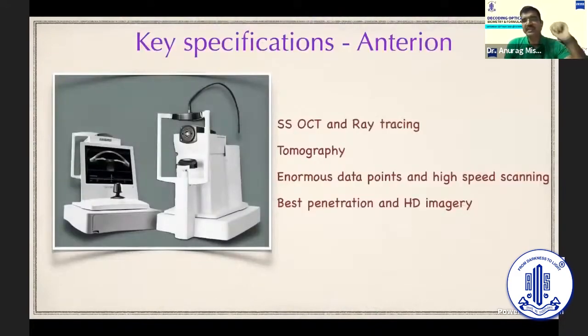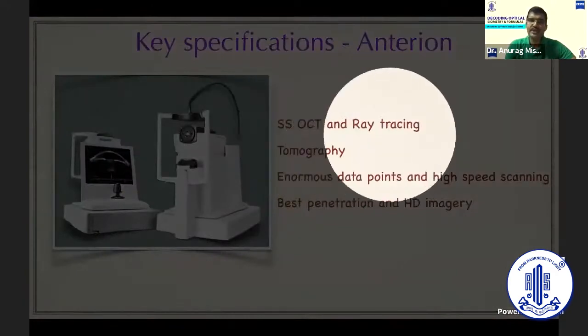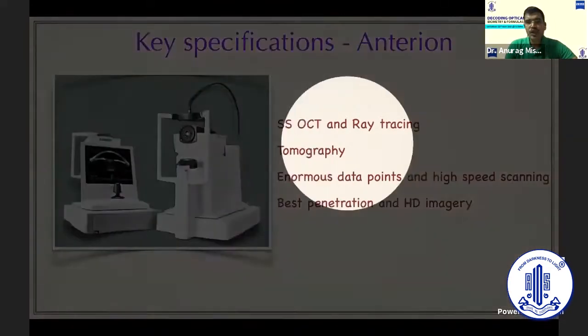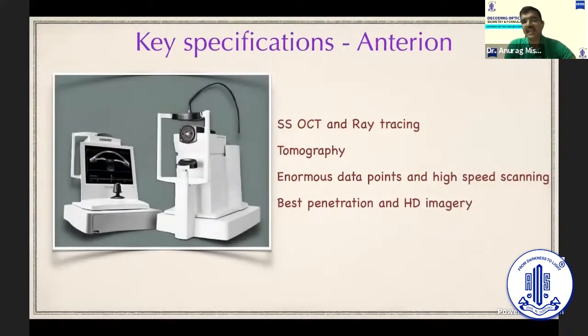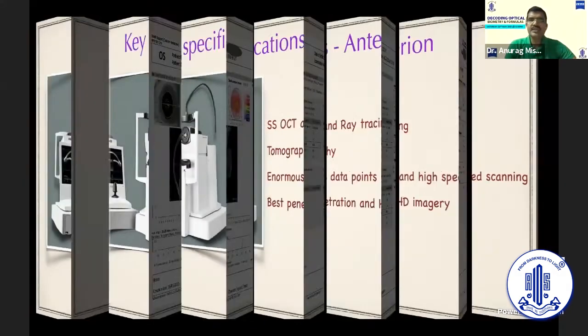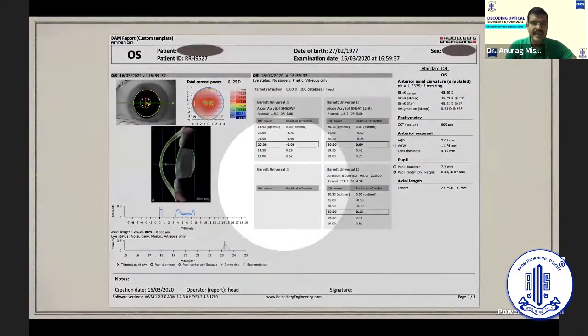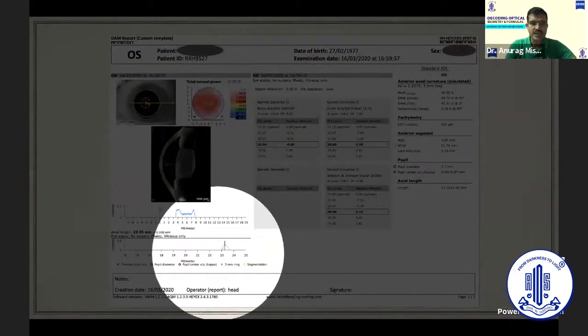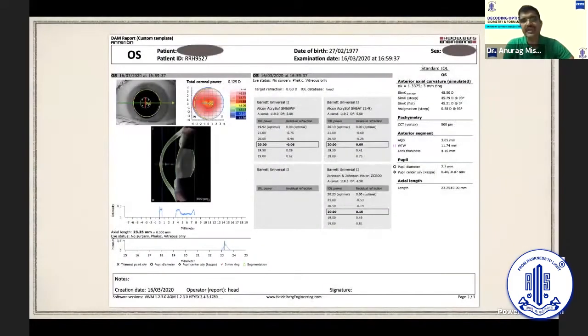The other SS-OCT based machine that I use is coming from the group of Heidelberg Engineering. It's called Anterion. It's got two technologies apart from SS-OCT. It also has ray tracing; it has tomography. It has enormous data points. It takes 16,000 data points just to give us the keratometry. It has an exceedingly good anterior segment OCT as well, as well as angle metrics. Excellent machine to work with. This is the printout that comes from the machine. It also gives us an A-scan in a divided setting, one the anterior, the other the posterior. There is a spike from which the machine has supposedly taken the reading from. It has different quality checks as well, as you will see a little while later. Fantastic machine to work with.